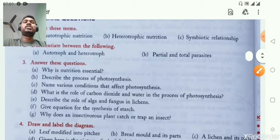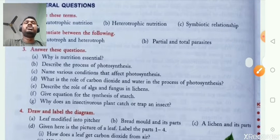Next question: Name the various conditions that affect photosynthesis. Basically, the requirements affect photosynthesis - carbon dioxide, water, sunlight, and chlorophyll.